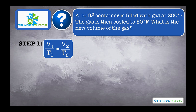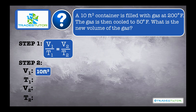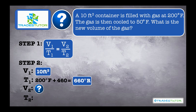Here's how we do this. Step 1: put your formula down — there's Charles Law. Step 2 is the most important part: write down the four variables. What is V1? 10 cubic feet. What is T1? It's 200, but we have to put that into absolute, so we add 460 to get 660 Rankine. Volume 2 is what we're trying to find, and temperature 2 is 50 Fahrenheit — add 460 to put it in absolute, and we get 510.